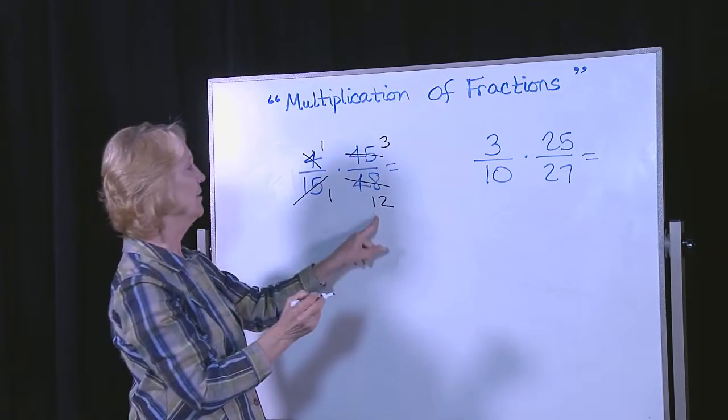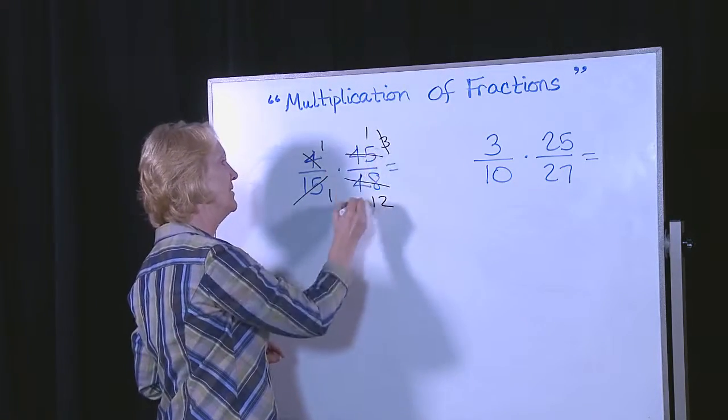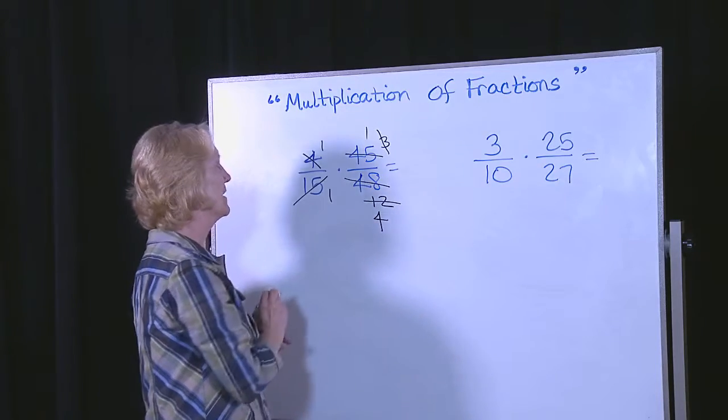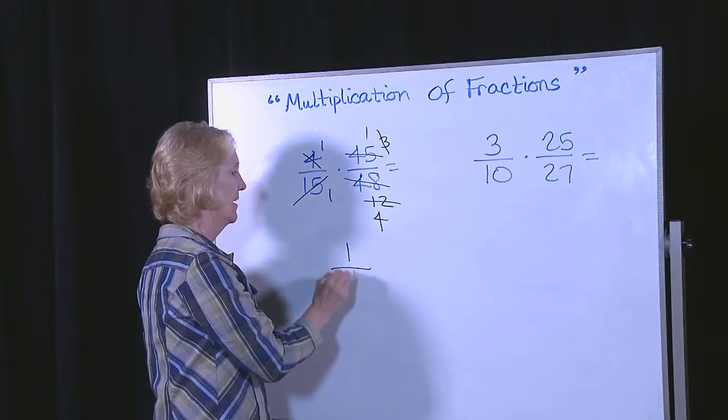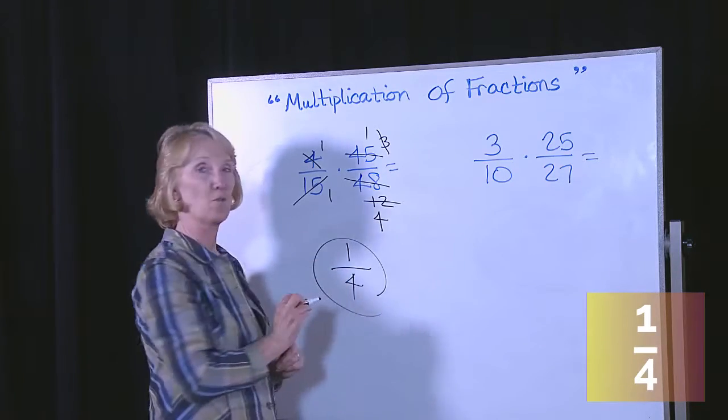However, 3 can go into 12. So 3 goes in here once. 3 goes in there 4 times. We end up with 1 times 1 over 1 times 4. And that's your answer. 1 fourth.